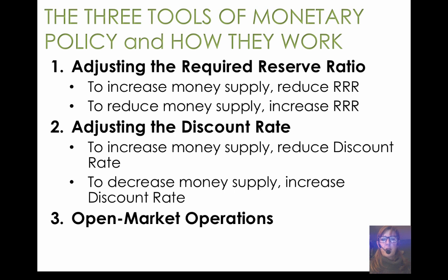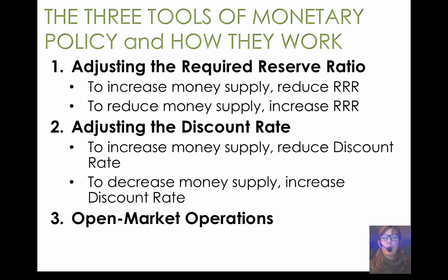We'll look at open market operations in more detail. But the first two simply look at how to get banks loaning more or loaning less. To loan more means banks increase loans, and that increases deposits throughout the banking system via the money multiplier. Anything the Fed does that increases banks' loaning ability will increase the money supply. The Federal Reserve has control over the legal minimum required reserve ratio. To increase the money supply, they'll reduce the required reserve ratio; to decrease it, they'll do the opposite, forcing banks to hold more in reserves and loan less out.